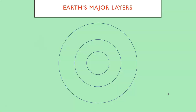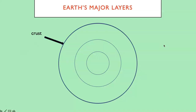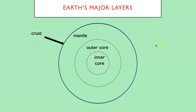We live on the crust. The crust is so thin on the scale of this diagram that it's just represented as a dark line. The next layer down is the mantle. Under the mantle we have the core, which is divided into the outer core and the inner core. We're going to talk a lot about these layers over the next several weeks.